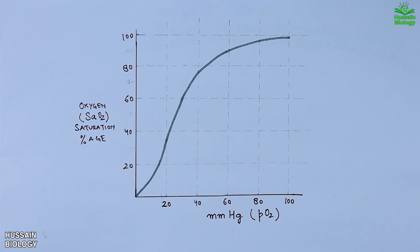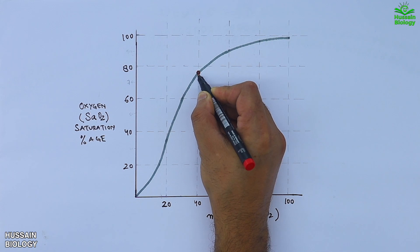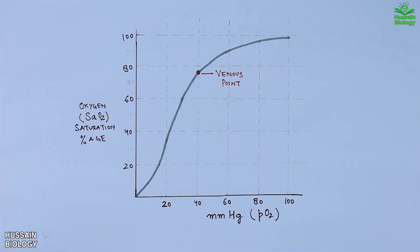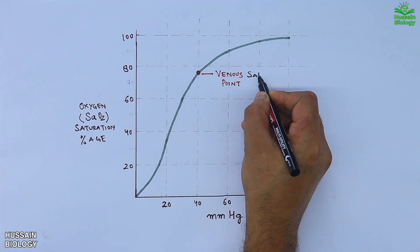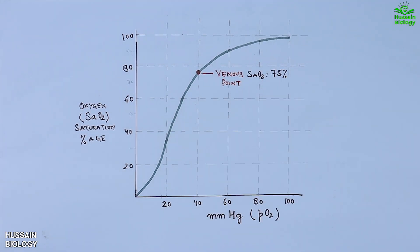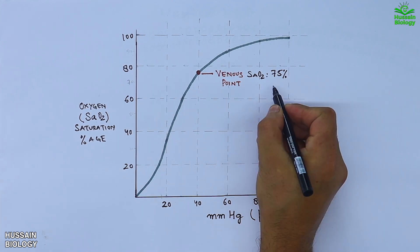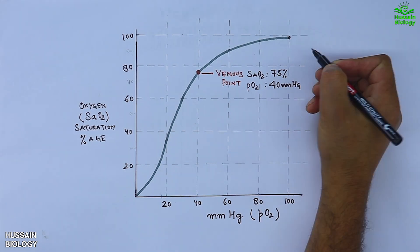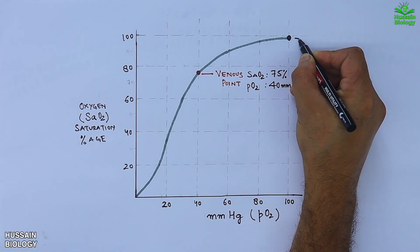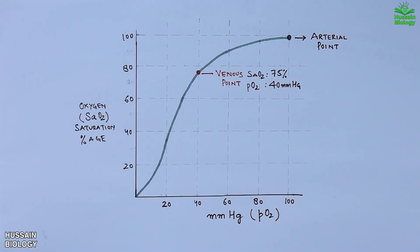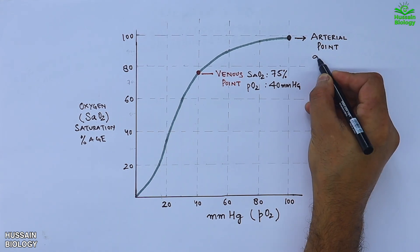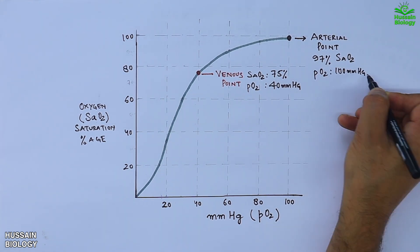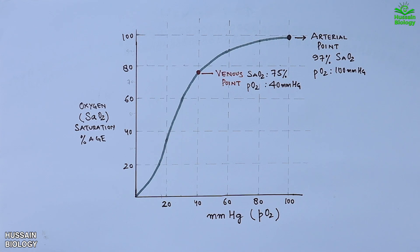On this curve we have the venous point, where the saturation of oxygen is 75% and the partial pressure of oxygen is 40 mmHg. Then we have the arterial point, where saturation of oxygen is 97% with a partial pressure of oxygen at 100 mmHg.